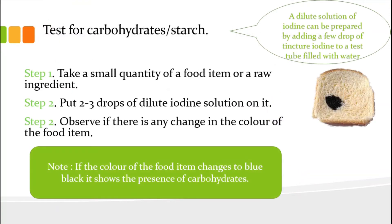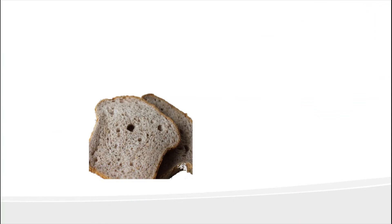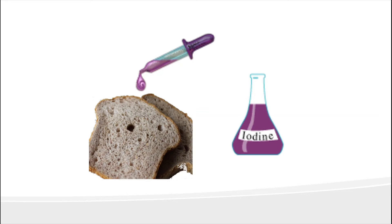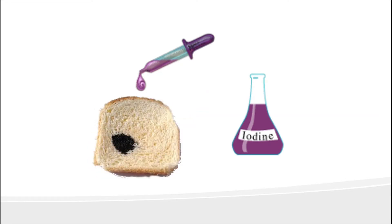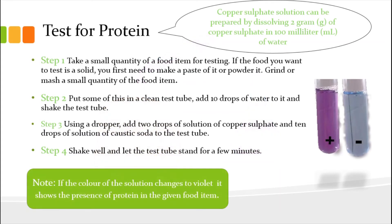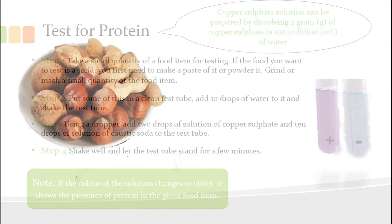First, let's talk about the test for carbohydrates. Take a small quantity of a food item or a raw ingredient and put two to three drops of dilute iodine solution on it. Observe if the food item shows any change in color. If the color changes to blue-black, as shown in the image, it indicates the presence of carbohydrates in the given food sample.